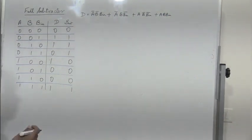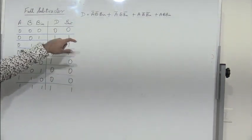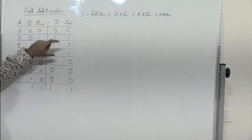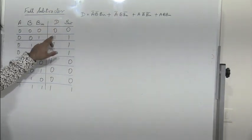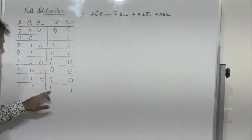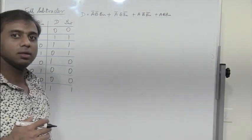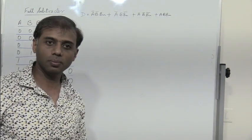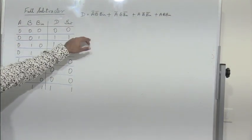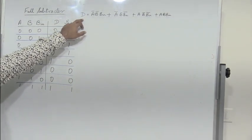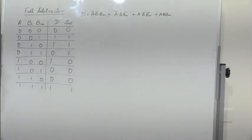Now the question is how can this expression be simplified. If you observe the truth table of a full adder, the sum and difference outputs remain the same. We have already seen that the expression for sum cannot be simplified. Similarly, the expression for difference cannot be simplified. But difference can be represented as A XOR B XOR Bin. We will see how that can be done.